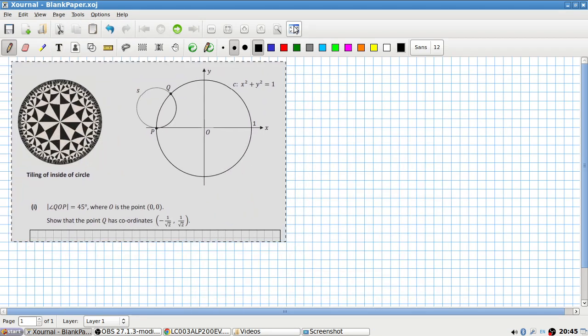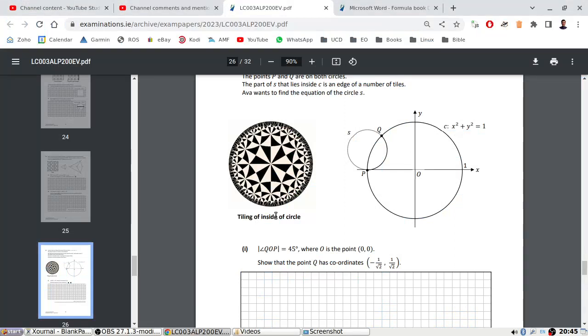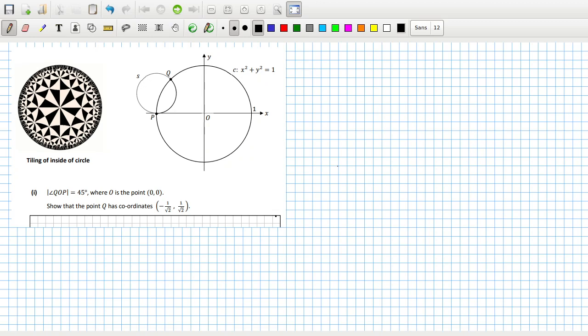Okay. Show that point Q has these coordinates. Angle QOP is 45 degrees. Okay, well that's okay actually because that means Q would be cos 135 and sine 135 from the proof earlier. Cos 135 is minus root 2 over 2, and sine 135 is root 2 over 2.